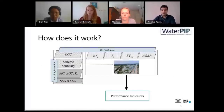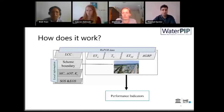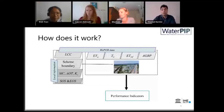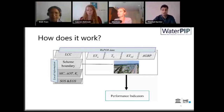The way it works is that you have WAPOR data and the land-use land-cover map coming from the same database. You can use your irrigation system boundary to extract information needed for performance indicators. Those details will be explained by TIC to some extent today, and continued by a detailed training in the week after, which goes through all the steps of how we extract this information.